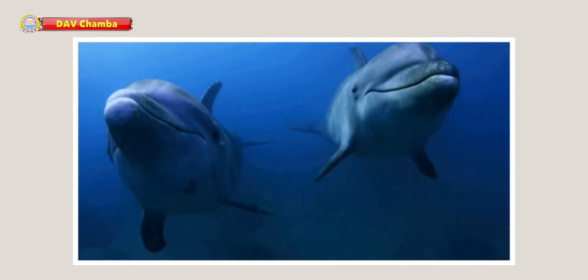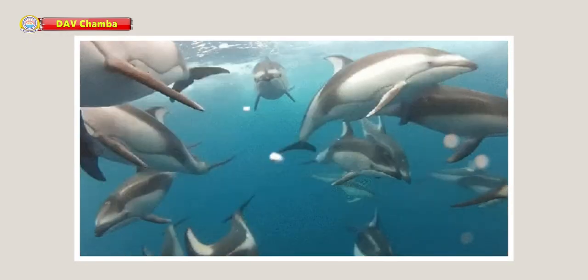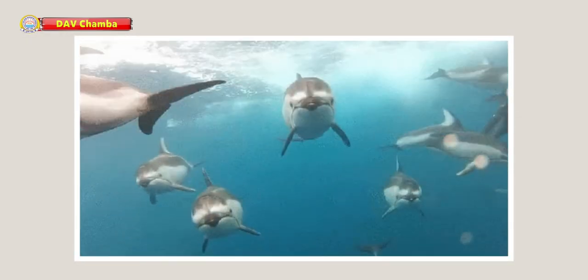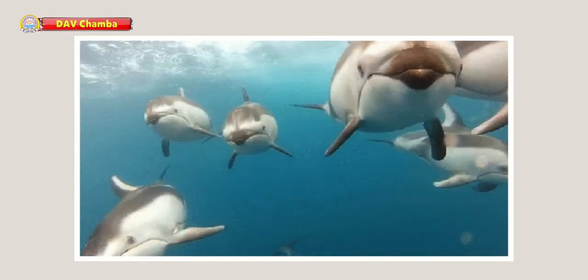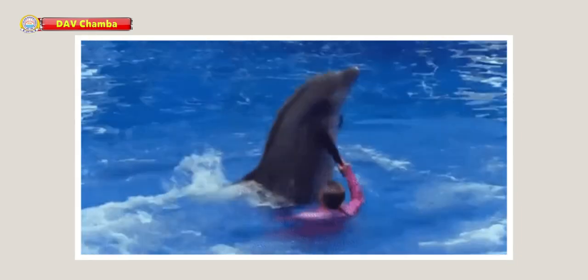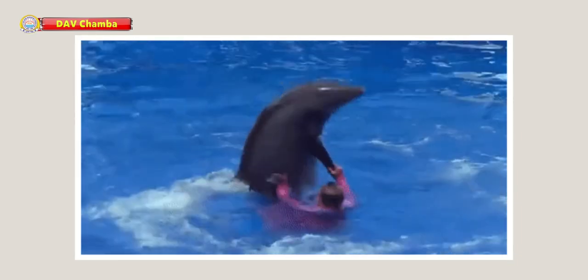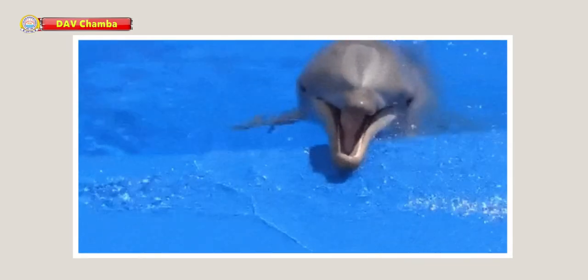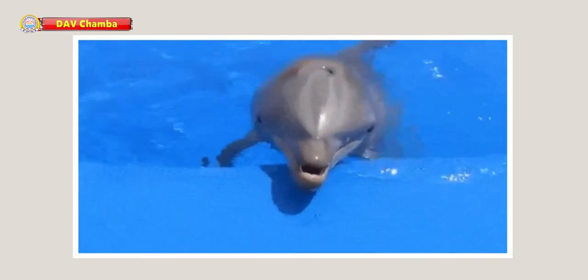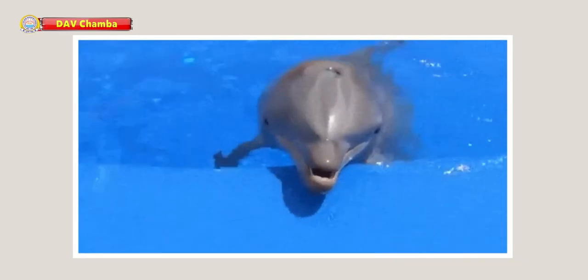See dolphins — dolphins live in oceans. They are very intelligent animals. Dolphins are considered to be intelligent because they can easily learn to perform tricks and play games.